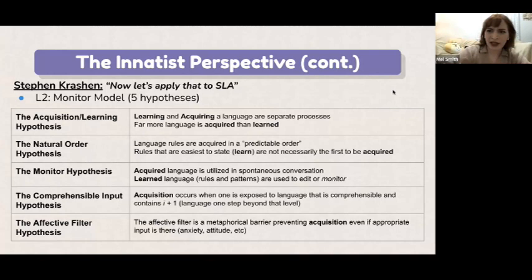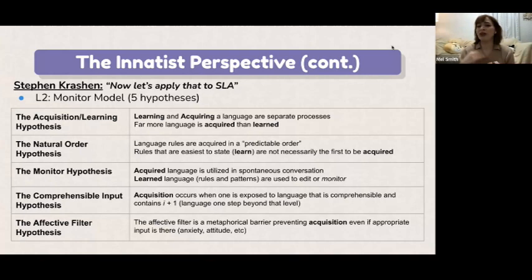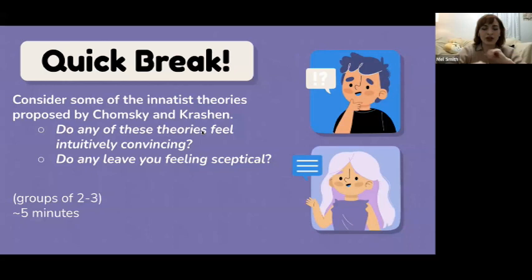Finally, there's the affective filter hypothesis. The affective filter is a metaphorical barrier preventing acquisition even if appropriate input is there. This involves anxiety, attitude, and stress. We're not always going to be the best language learners every day. Some days our affective filter will be up — we have anxiety, stress, maybe we didn't sleep — and that's the barrier preventing acquisition.